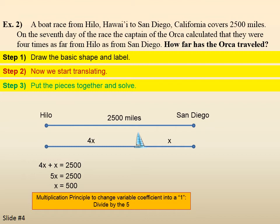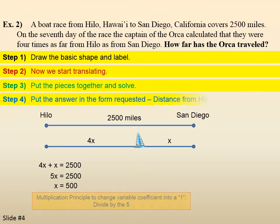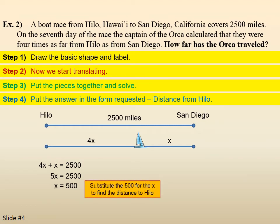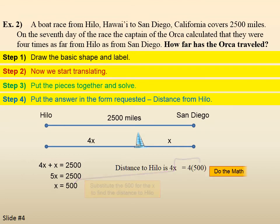But, it didn't ask for x. X is the distance to San Diego. That's the distance to go. So, we need to put it in the form requested, which is distance from Hilo. Well, the formula was 4x for Hilo. So, we put the 500 in for the x. Do the math. And, we end up with 2,000 miles.